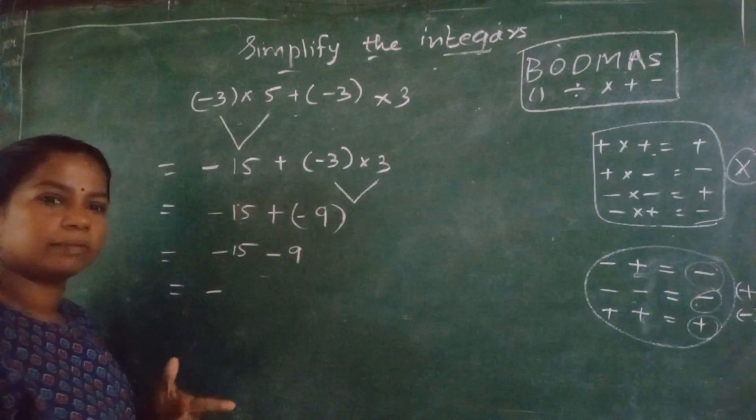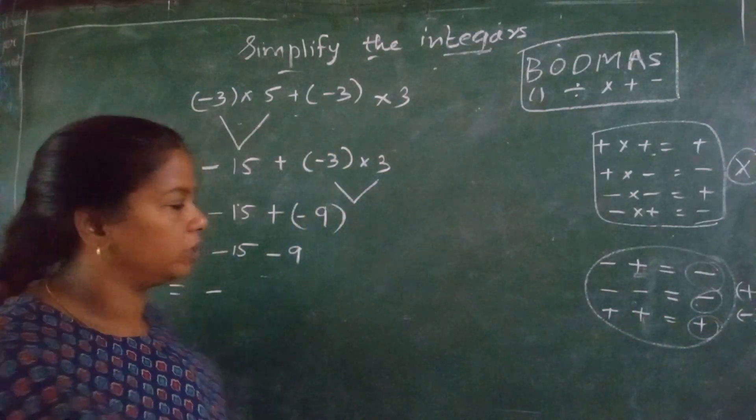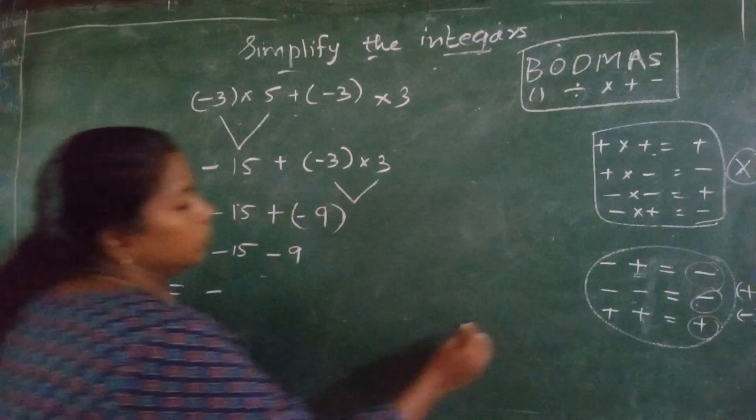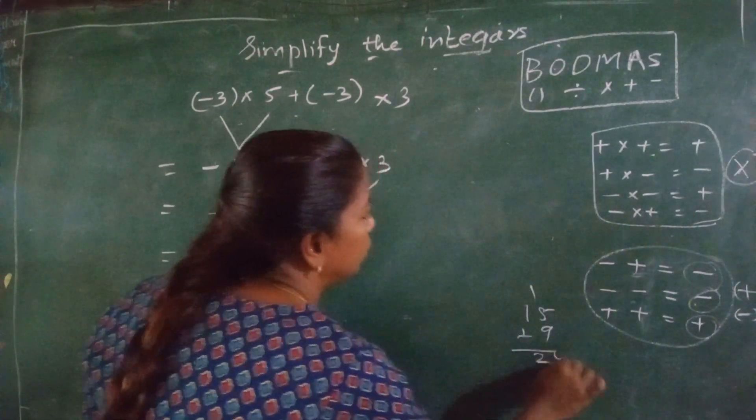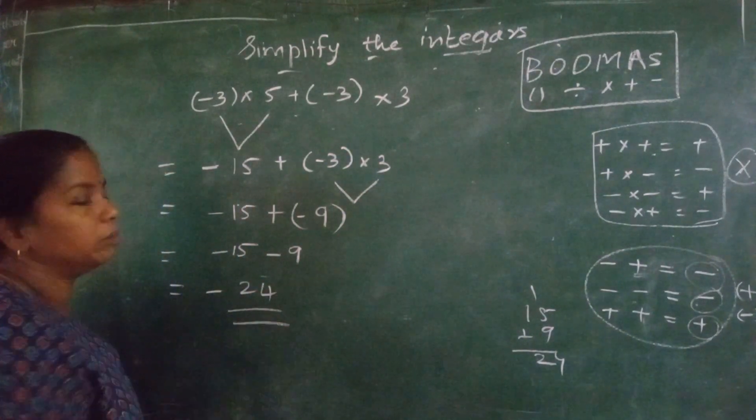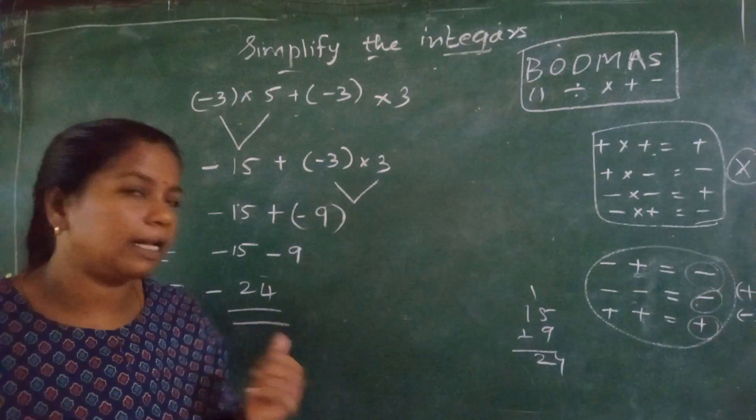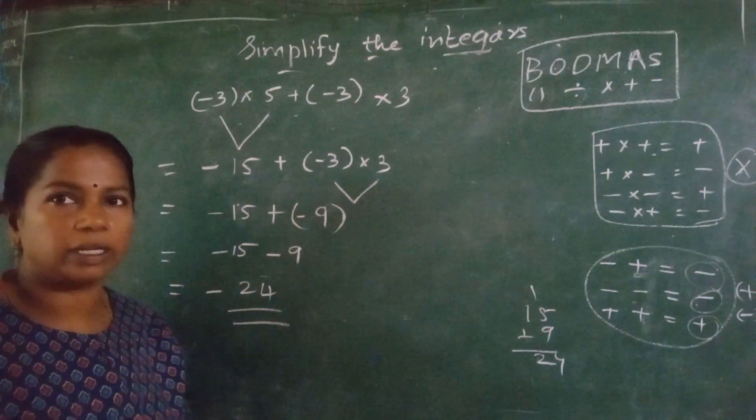Put the same sign and, when two same sign come, put the same sign and add it. Sorry, not subtract it. You have to put the same sign and you have to add it. So, 15 plus 9, how much? 24. Remember this. When two same sign come, put the same sign and add it. So, I have added it and I have put the same sign. Got it?